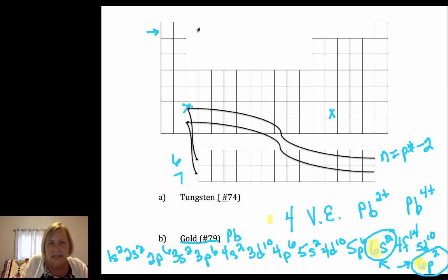So it can lose the p's and then the p's and the s's is what lead typically does. Now its noble gas would be xenon, 6s2, 4f14, 5d10, 6p2 would be the abbreviated.